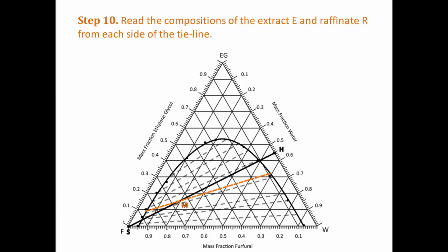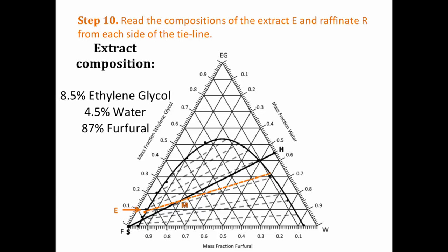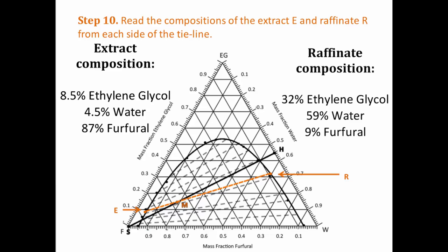Finally, read off the compositions of the extract and raffinate phases. The extract is a solvent with the material that has been extracted and will lie on the furfural side of the curve. It is found to have a composition of 8.5% ethylene glycol, 4.5% water, and 87% furfural. The raffinate is found to be 32% ethylene glycol, 59% water, and 9% furfural.